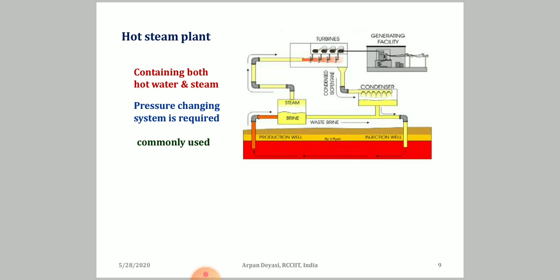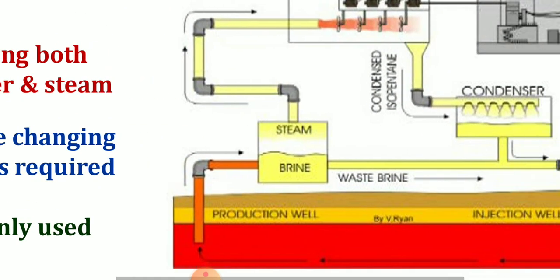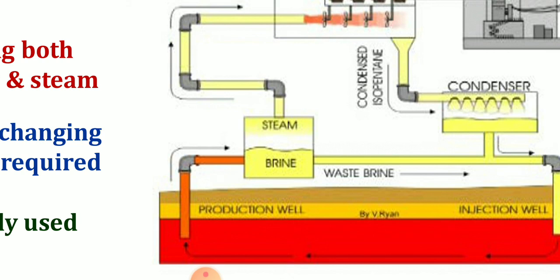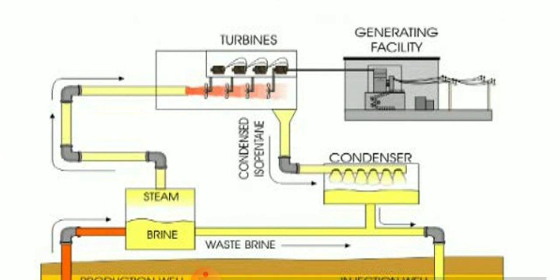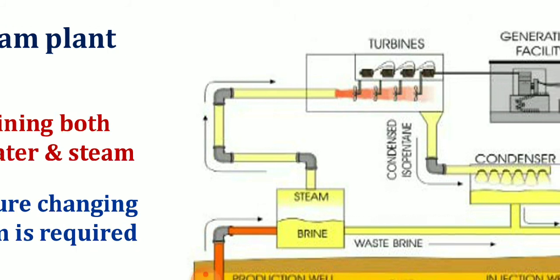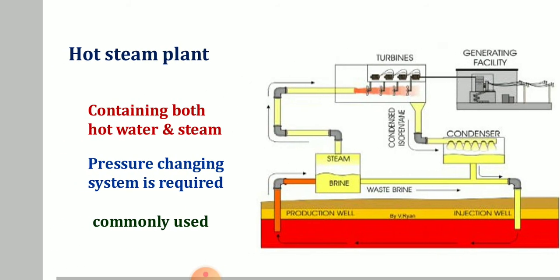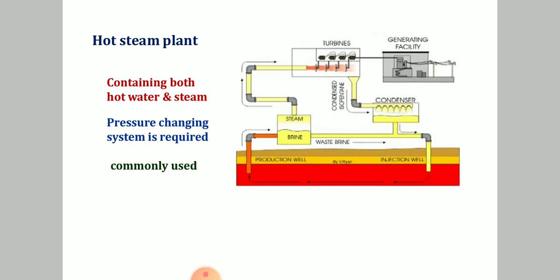The dry steam plant was later replaced by the hot steam plant, whose scenario is slightly more complex. From the production well, the output goes to steam or brine. Some of the waste brine is returned to the injection well, and some goes to the turbine to generate electricity — so the brine or steam is divided into two parts. This plant contains both hot water and steam, requiring a pressure-changing system. The hot water quickly cools and goes to the injection well, while steam rotates the turbine, condenses, and is added to the cooled water. It is commonly used and has the facility to segregate hot water and steam.